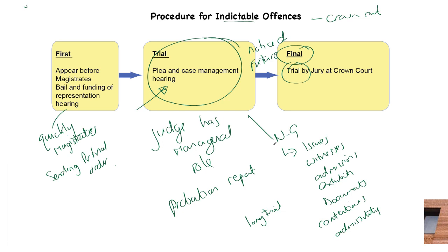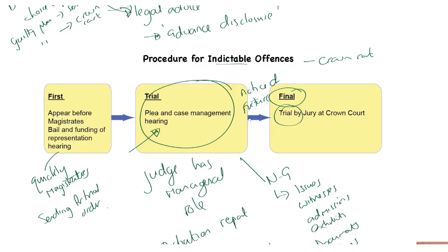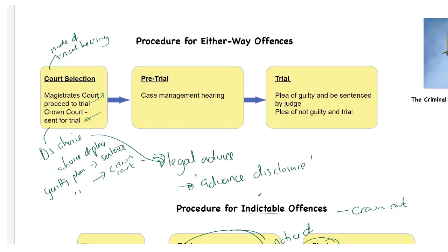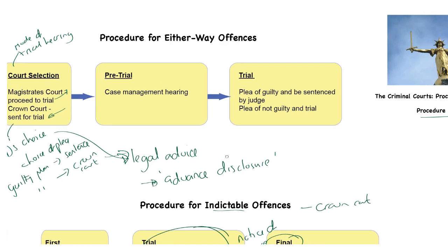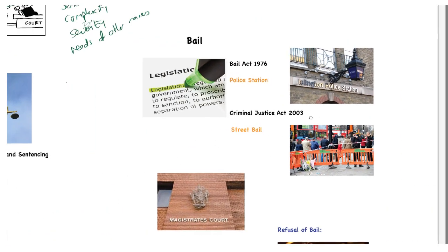What you're likely to be asked in an exam question is: after your scenario you'll decide that somebody is liable for a Section 20 or Section 18 offense, or an ABH offense, and the question is likely to ask what is the procedure for that person to go to court. If it's a Section 18 you will go through the indictable offense procedure. If it's a Section 20 or ABH then you'll go through the either-way procedure. The only thing left to talk about on this video is bail.